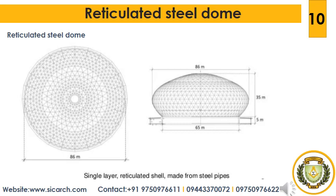Gaudí determined the shape of structures by performing physical modelling — he built hanging models from chains acting in pure tension. Inverting the obtained shape gives a structure in pure compression. Economic design of shell structures is based on this same concept. Today, similar to Gaudí's model, computer-aided structural design determines the optimal shape of reticulated shells using form-finding methods originally developed for tensile structures, such as dynamic relaxation.